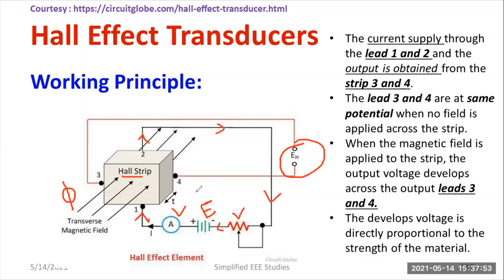Current passes between terminals 1 and 2, and a transverse magnetic field perpendicular to the current is applied. As a result, an EMF is obtained at terminals 3 and 4. The magnetic field generates the EMF, and how much magnetic field has been applied can be measured in terms of voltage or EMF using a voltmeter. The current supply is through leads 1 and 2, and the output is obtained across 3 and 4.